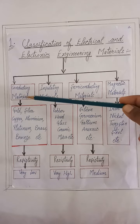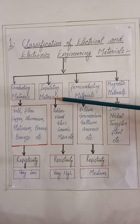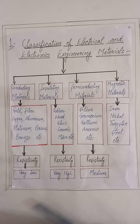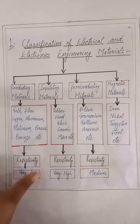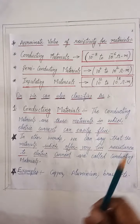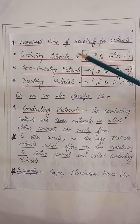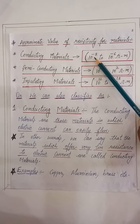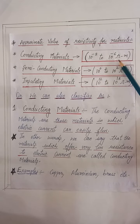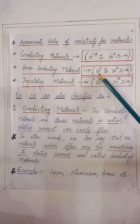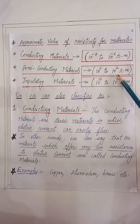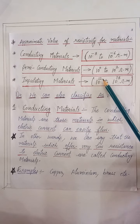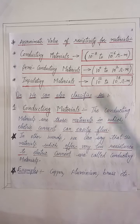The value of resistivity for the conducting material is very low. For insulating material, the value of resistivity is very high. But for the semiconducting material, the value of resistivity has a medium range. These are the approximate values: for conducting material, 10 raised to power minus 8 to 10 raised to power minus 6 ohm meter; for semiconducting material, 10 raised to power minus 8 ohm meter; for insulating material, 10 raised to power minus 12 to 10 raised to power minus 18 ohm meter.